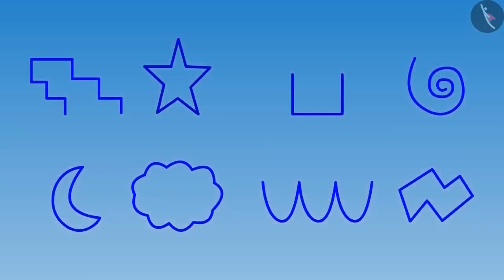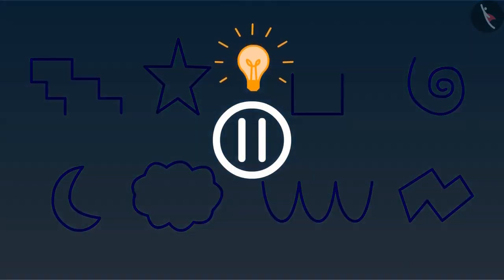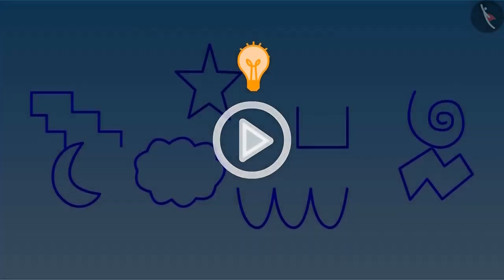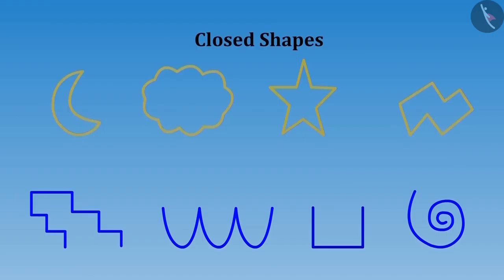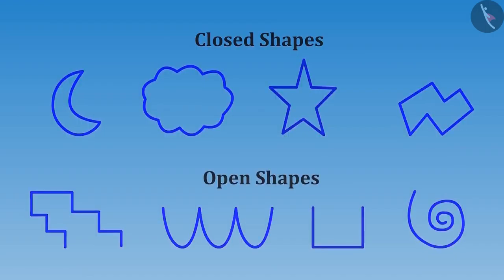Look here Riva, I have made figures of closed and open shapes. Can you classify them into two groups? If you want, you can pause the video here and do the activity. Yes, you identified correctly. These are closed shapes and these are open shapes.